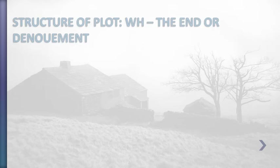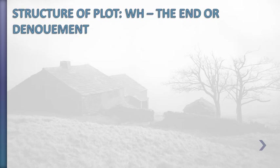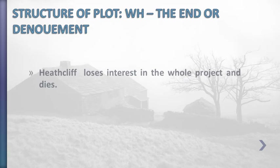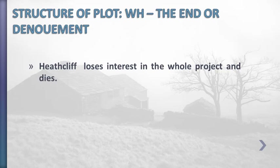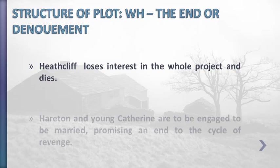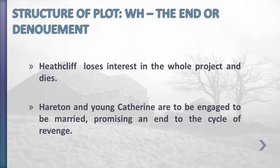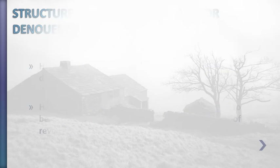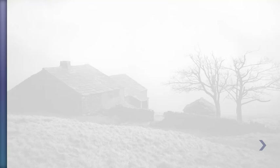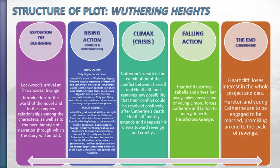We have reached the end of the novel — the denouement. In the end, Heathcliff loses interest in the whole project and dies, meaning his revenge does not make him happy. On the other hand, Hareton and young Catherine are to be engaged to be married, promising an end to the cycle of revenge. By the death of Heathcliff, a happy ending is achieved at the end of the novel. That was the plot of Wuthering Heights, which traces Freytag's plot structure.